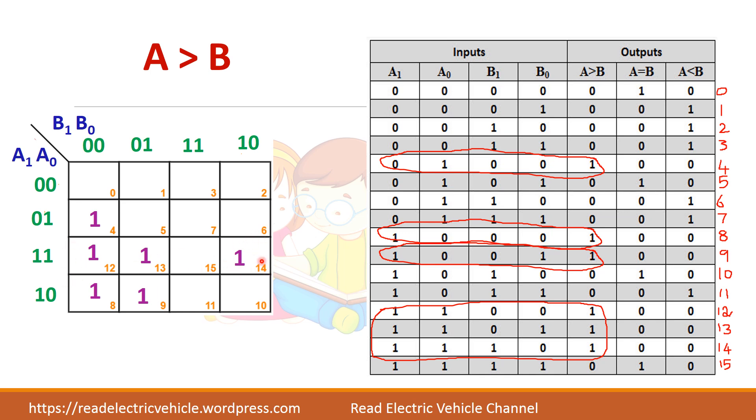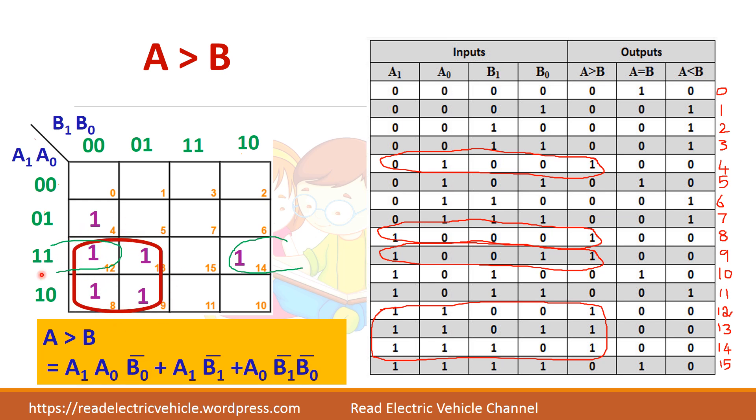So now let us club the 1s together to find the expression. First here 1, 1 is there. This side also 1 is there. So first you can combine these two. So if I take these two, what is the common term? A1, A0 and for these two, B0 bar is common. So first term I got it. Then I am clubbing all the four 1s together. So here the common term is A1 and here the common term is B1 bar. So A1, B1 bar.